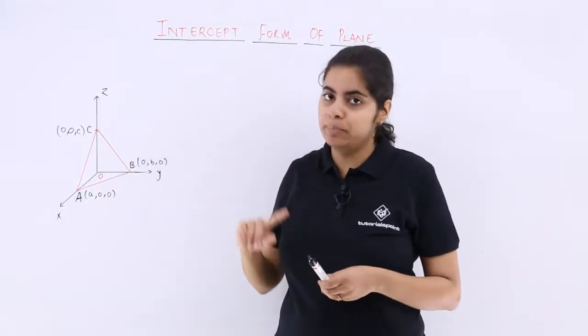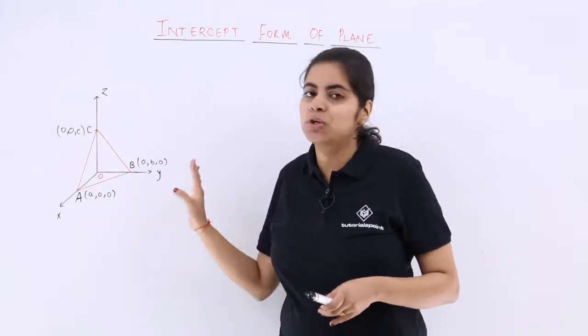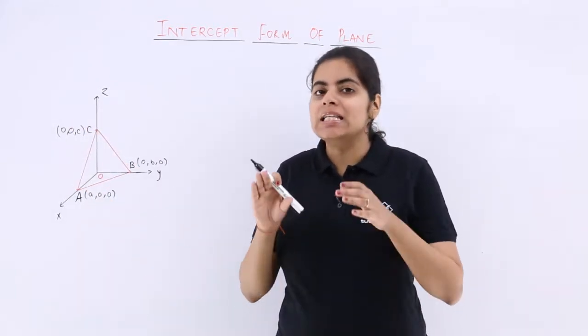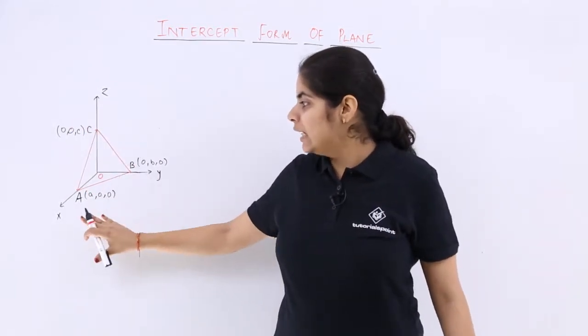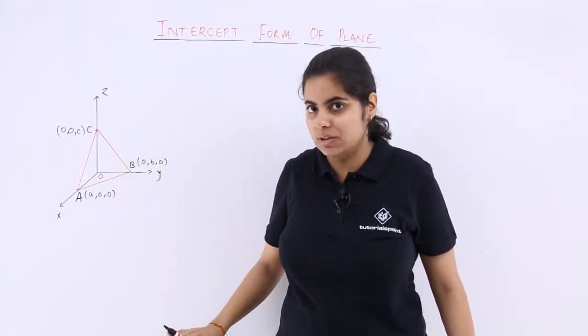Let's learn the intercept form of a plane. The intercept form of a plane is represented by this diagram. There is a plane that makes intercepts on the x-axis, y-axis, and z-axis respectively.